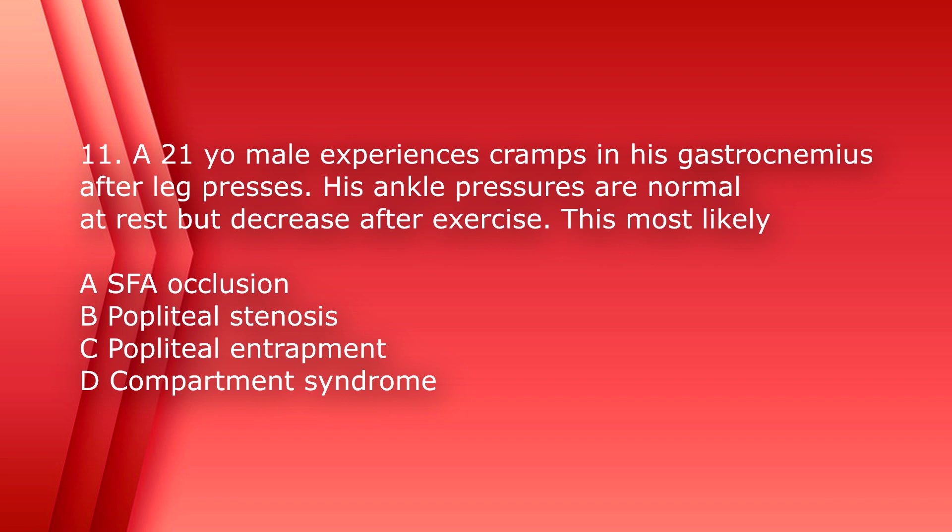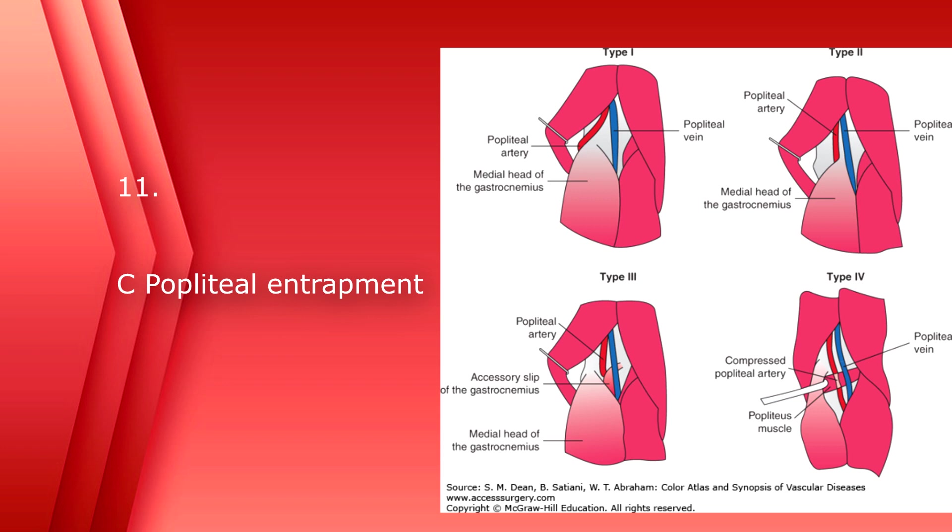Number 11. A 21-year-old male experiences cramps in his gastrocnemius muscle after leg presses. His ankle pressures are normal at rest but decrease after exercise. This is most likely A, femoral artery occlusion, B, popliteal stenosis, C, popliteal entrapment, or D, compartment syndrome. The answer is C, popliteal entrapment. Femoral artery occlusion would be uncommon in a 21-year-old. And popliteal stenosis would also not be likely in such a young patient. Compartment syndrome is increased pressures in a muscle compartment, usually caused from an injury like a fracture.